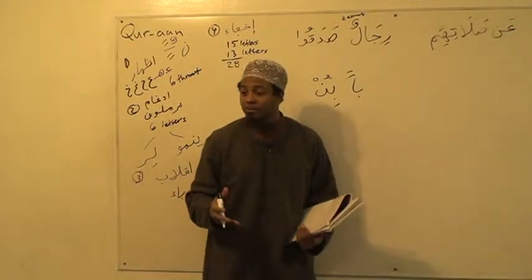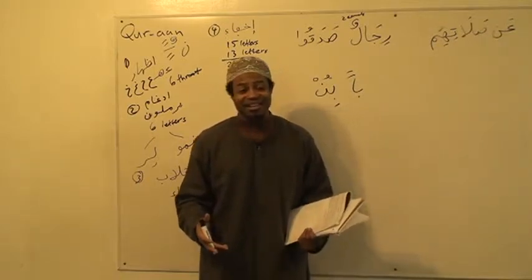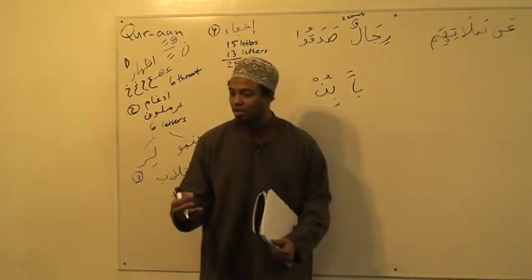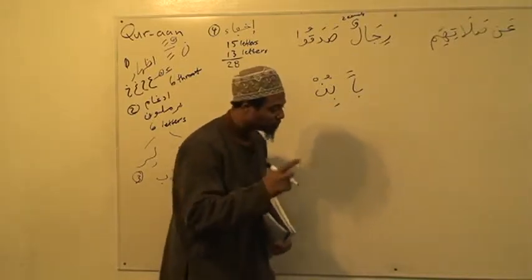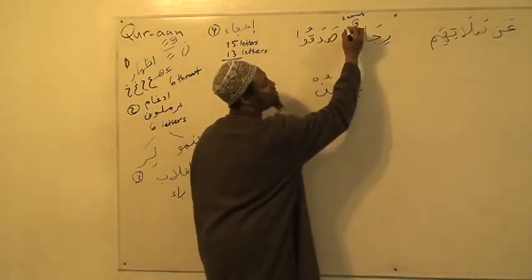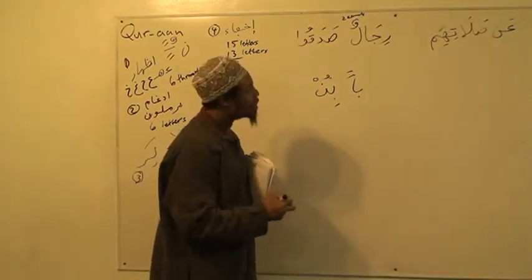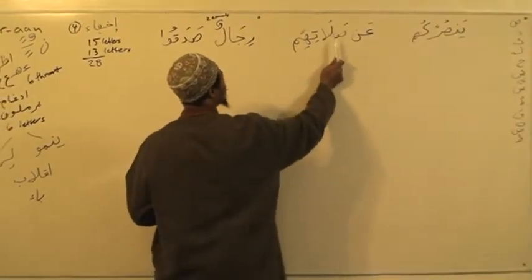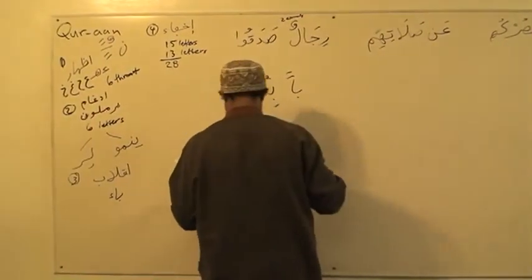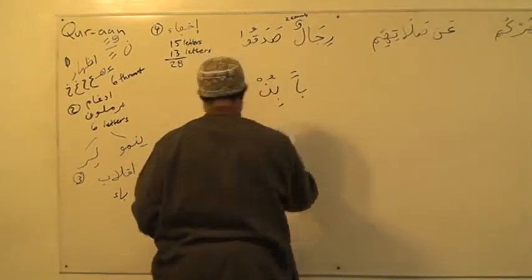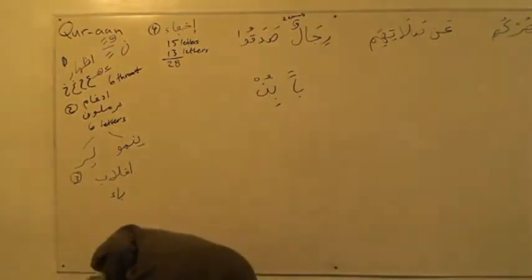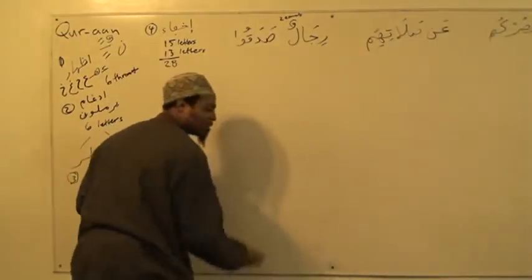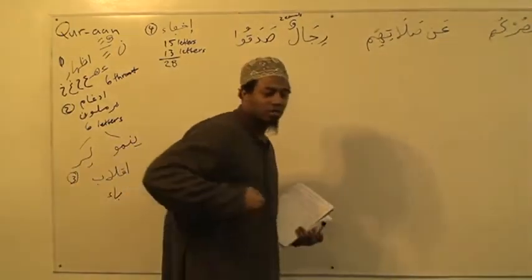If a person does it incorrectly, that's not right — even if it's sold on CDs. We're doing it the correct way. The point is to get that noon almost pronounced, then start with the sad within two counts. So we have examples in one word: 'Yansurkum'; in two words: 'An Salatihim'; and with tanween: 'Rijaalun Sadaq'. The time is little but the obligations are many, so we have to work hard.